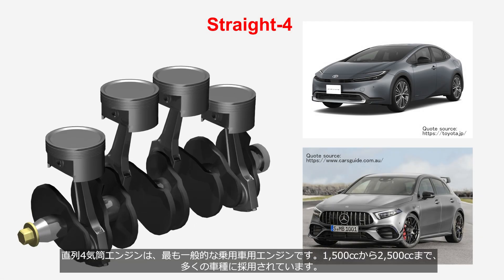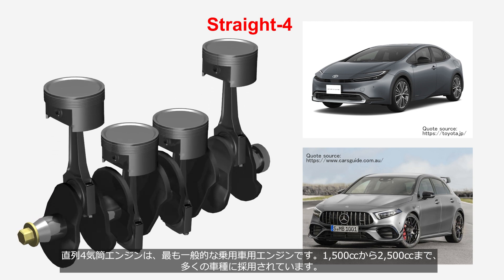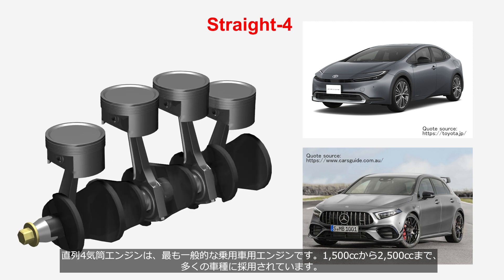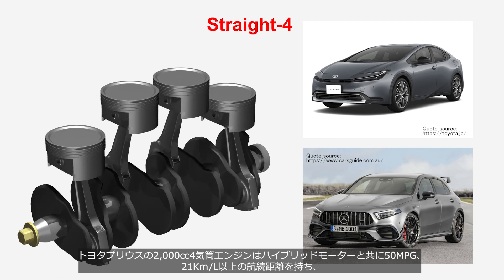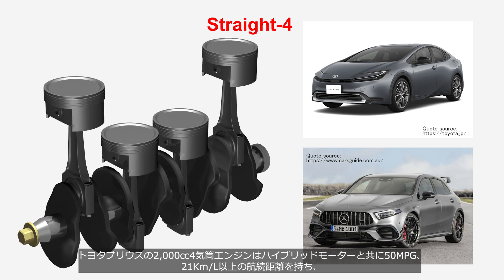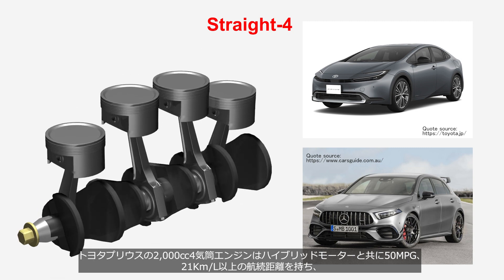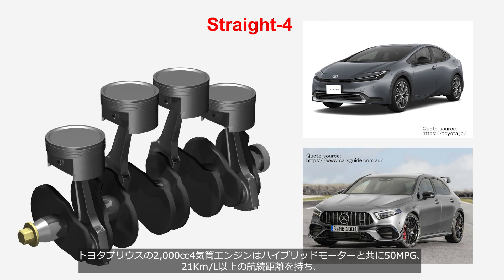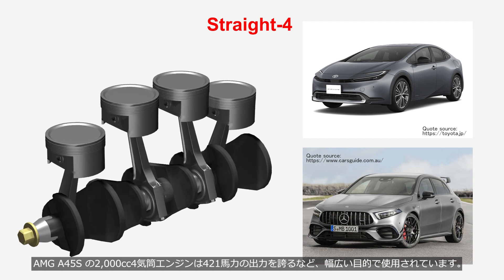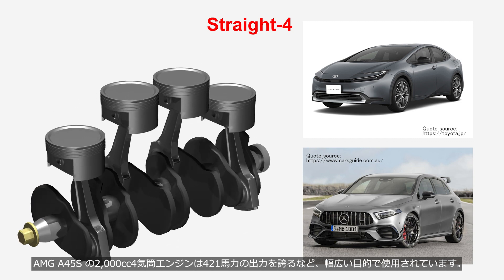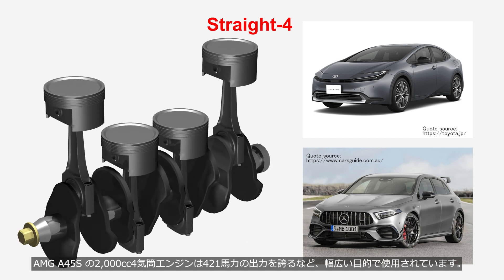The straight four engine is the most common type of engine used in passenger cars, adopted in many models ranging between 1500cc to 2500cc. The 2000cc straight four engine of the Toyota Prius, combined with a hybrid motor, achieves fuel efficiency of over 50 miles per gallon or 21 kilometers per liter. On the other hand, the 2000cc straight four engine in the AMG A45S boasts an output of 421 horsepower, demonstrating the versatile applications of straight four engines.